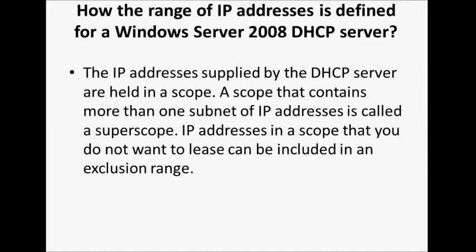How is a range of IP addresses defined for a Windows Server 2008 DHCP server? The IP addresses supplied by the DHCP server are held in a scope. A scope that contains more than one subnet of IP addresses is called a super scope. IP addresses in a scope that you do not want to lease can be included in an exclusion range.